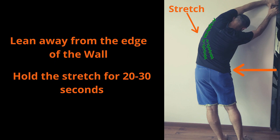Now lean away from the edge of the wall and feel a nice stretch along the side of your upper body. Hold the stretch for 20 to 30 seconds.